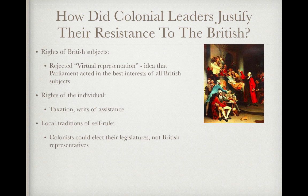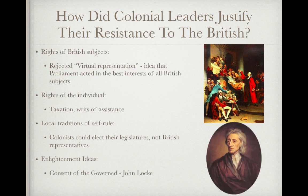Local traditions of self-rule were also cited. Colonists could elect their own legislatures — such as the Virginia House of Burgesses, elected by qualified Virginia voters — but had no representation in Parliament. And of course, Enlightenment ideas — the big theme from period two — including John Locke's concept of consent of the governed: the idea that people have the right to life, liberty, and property, and can choose their own form of government. Those ideas were very influential during this time.